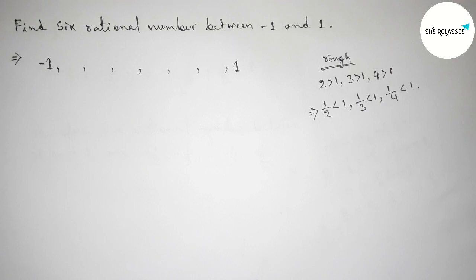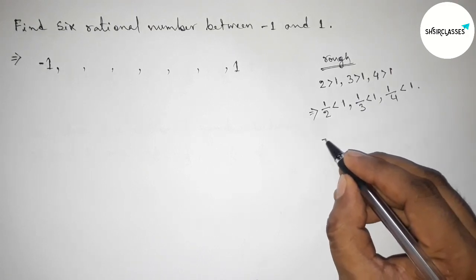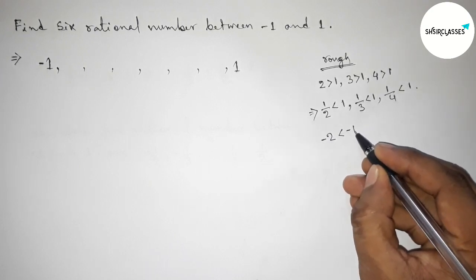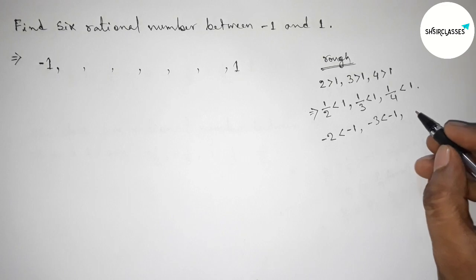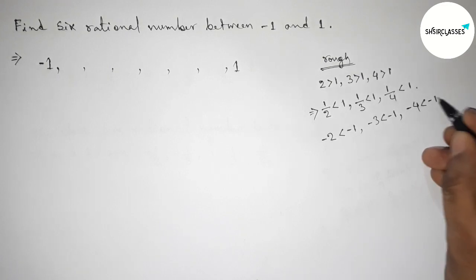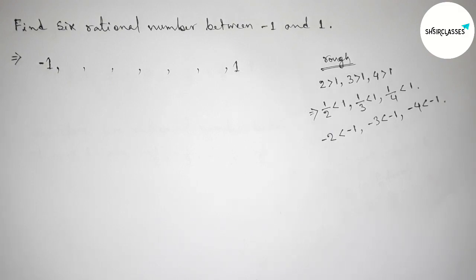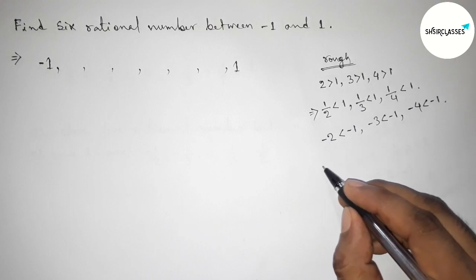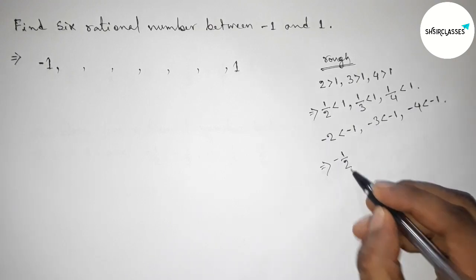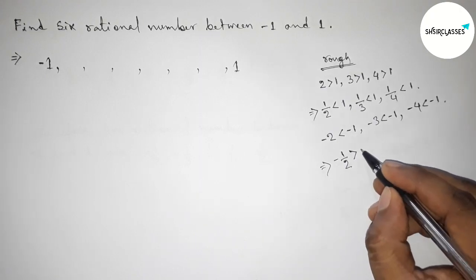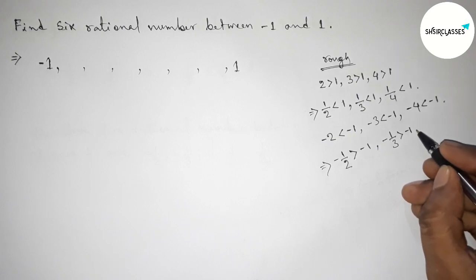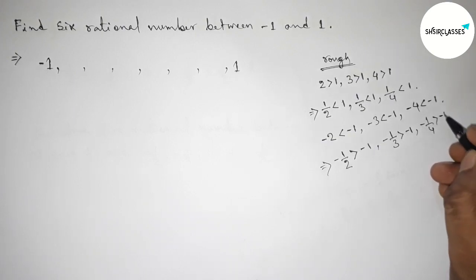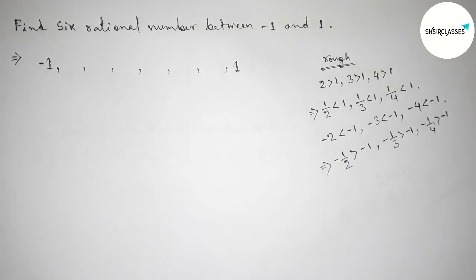Similarly for negative numbers: taking minus 2 which is less than minus 1, minus 3 less than minus 1, and minus 4 which is less than minus 1. Now by the same method, taking the inverse of all these numbers. The inverse of minus 2 is minus 1/2, which is greater than minus 1. Similarly, minus 1/3 is greater than minus 1, and the inverse of minus 4 is minus 1/4, which is greater than minus 1.